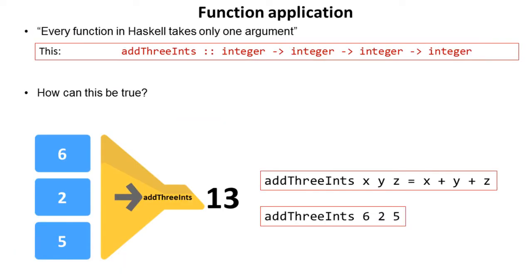Now here's an interesting statement: every function in Haskell takes only one argument. Now you're probably thinking how can that be true? We've literally just looked at a function that we declared called addThreeInts and it clearly takes in three arguments.